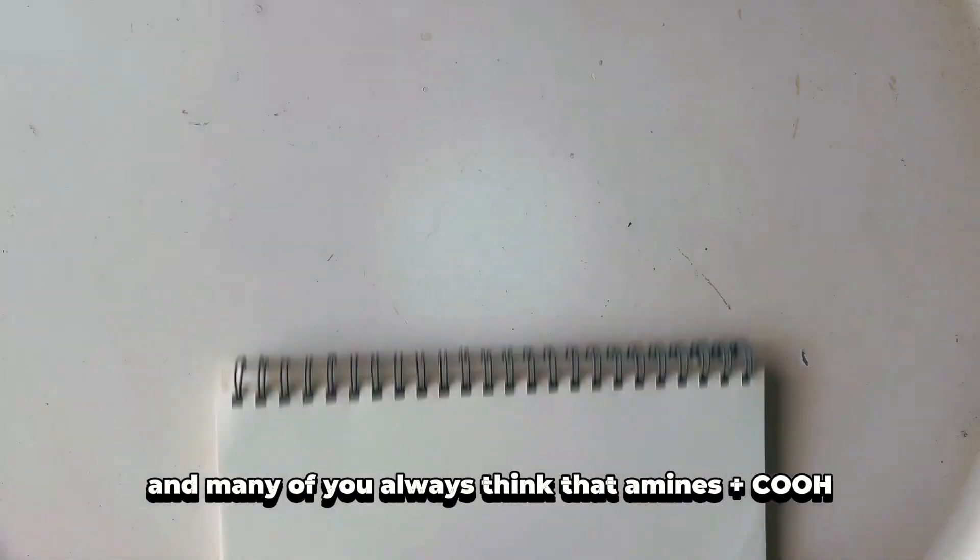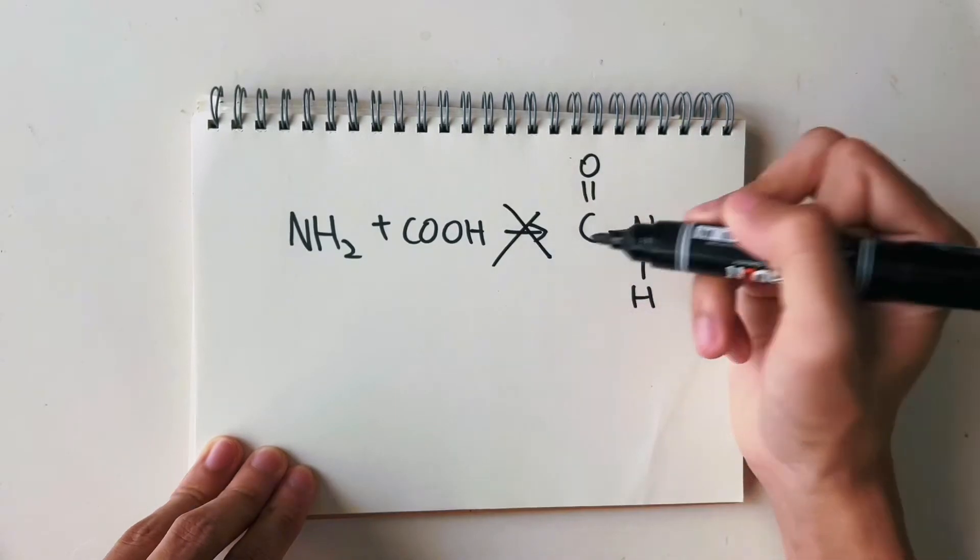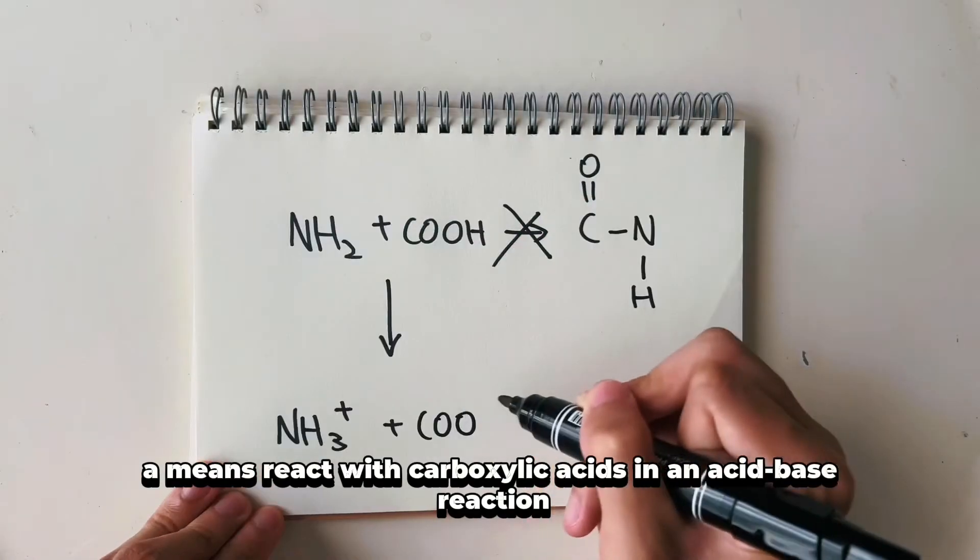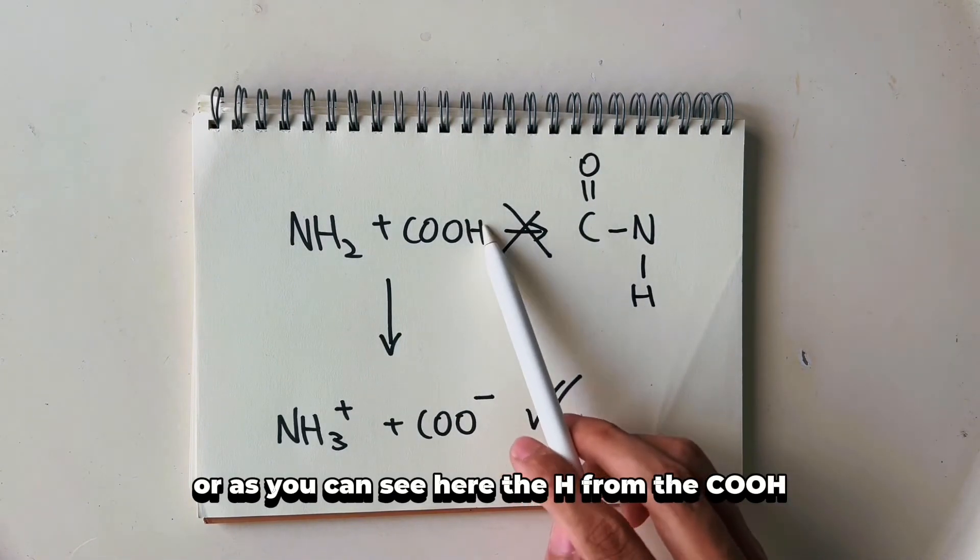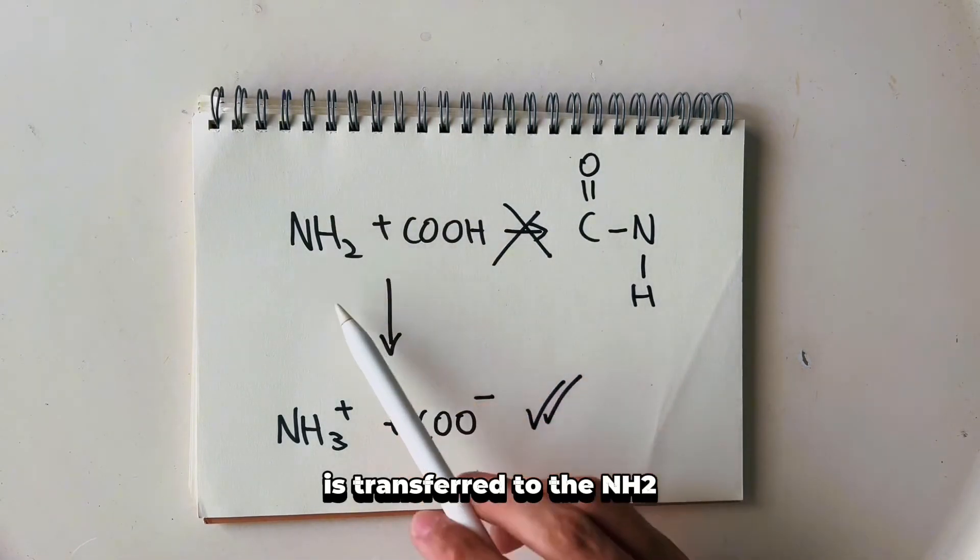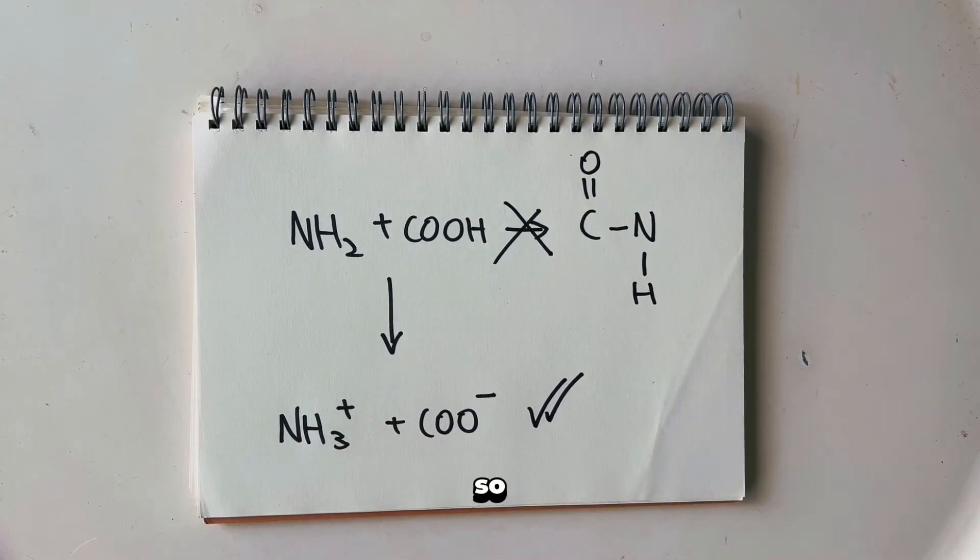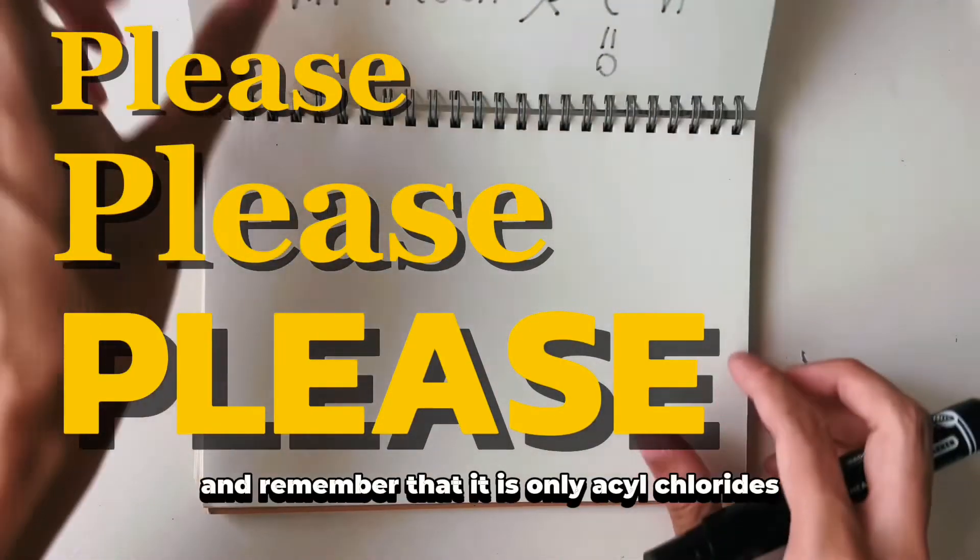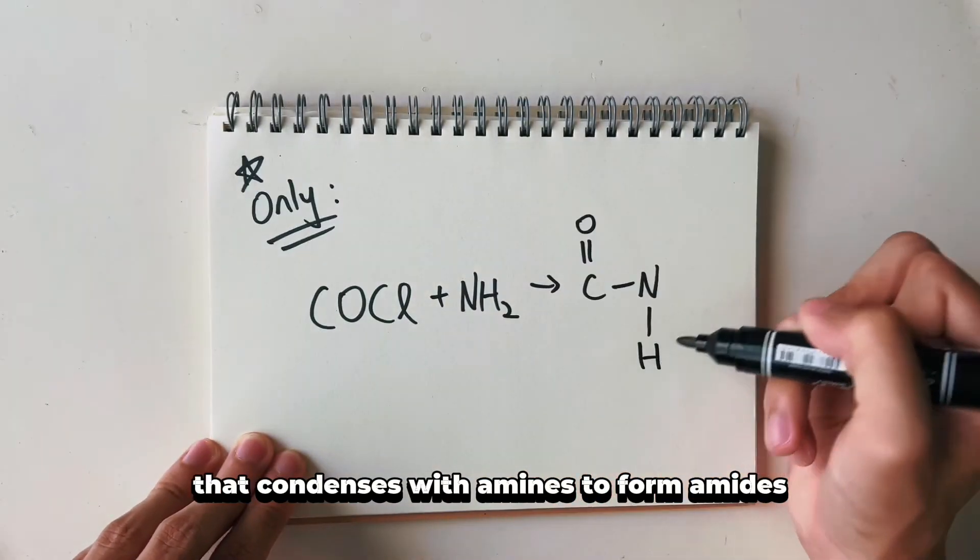Many of you always think that amines plus COOH gives you an ester, but it does not. Amines react with carboxylic acids in an acid-base reaction. The H from the COOH is transferred to the NH2 in a simultaneous protonation and deprotonation process. Please, please, please write down and remember that it is only acyl chloride that condenses with amines to form amides and not carboxylic acids.